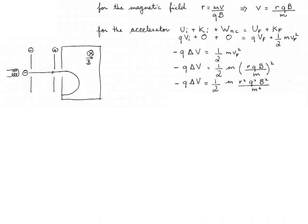Hopefully now we can make a few simplifications. On the right-hand side, the mass on the numerator cancels one power of mass on the denominator. And the charge on the left-hand side cancels one power of charge on the right-hand side. So we get: negative delta V equals one-half R squared QB squared divided by m. Rearranging and solving for R, we get R equals the square root of negative delta V times 2 times the mass of the particles, divided by the charge times B squared.